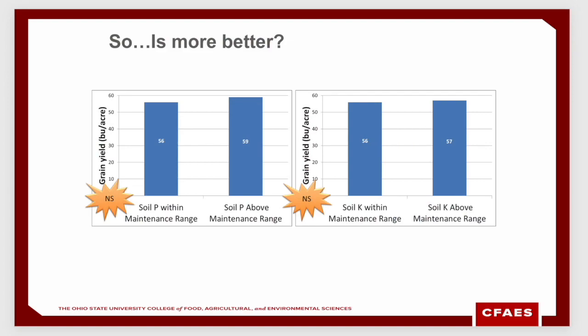We've talked about what happens when we hit that maintenance range for P and K. What happens when we exceed those levels — is more better? In our research, no. We have these maintenance ranges where we want to apply fertilizer to compensate for what you remove when you're harvesting — the P and K coming out of the grain. When we exceed that maintenance level and add more fertilizer anyway, we've seen very little benefit. Comparing the maintenance range versus above the maintenance range, there were no significant differences in yield.